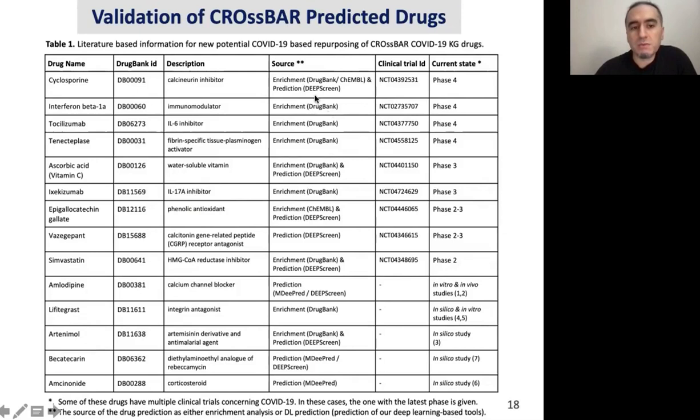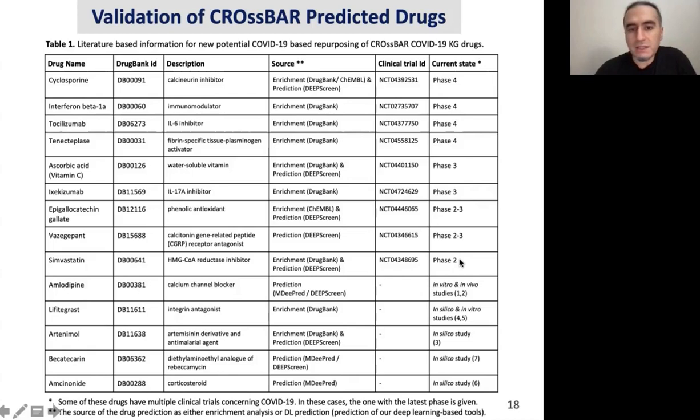Based on enrichment-based analysis and our deep learning-based predictors, we predicted some drugs to be utilized against COVID-19. We wanted to see if these predicted drugs make biological sense, so we checked the literature. We found that for most of them, there is at least one clinical trial at different phases, leading us to conclude that these results can be assumed to have biological relevance. There are many more drug predictions that can be evaluated in terms of new studies as well.